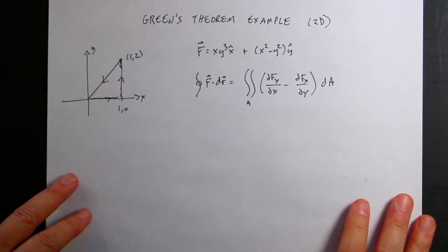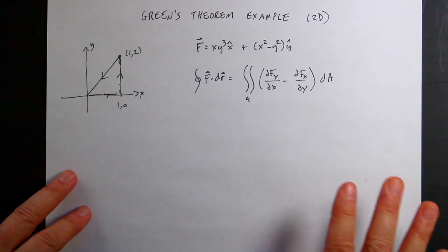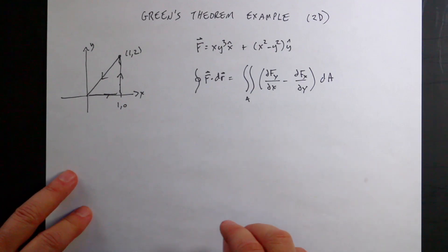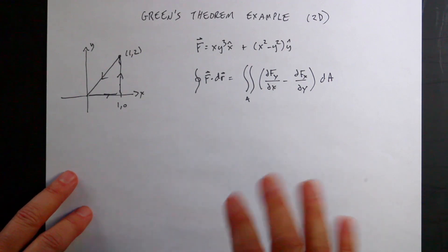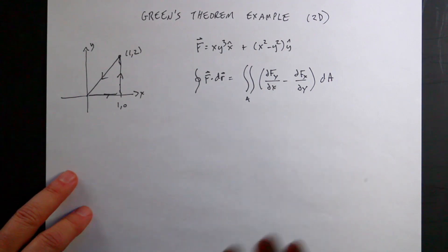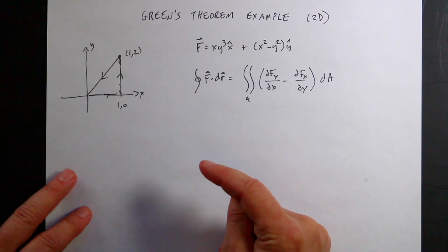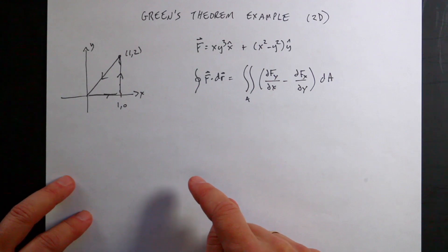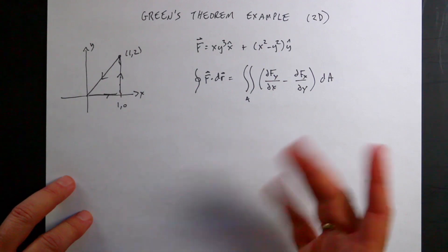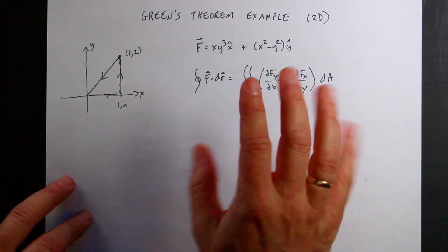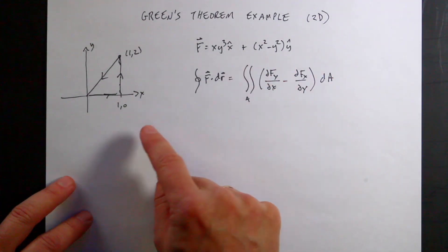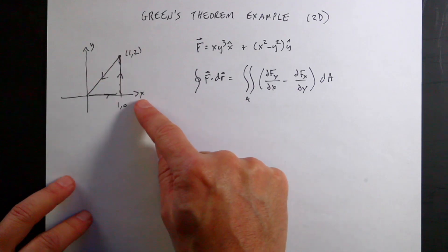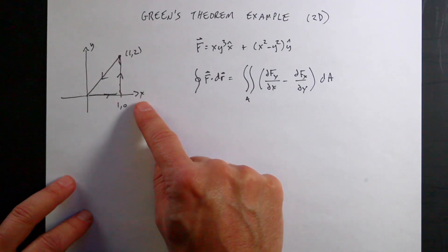I want to do an example of Green's Theorem. You may have used Green's Theorem without even knowing it in Maxwell's equations, but let's just do this from a mathematical point of view. I'm not going to derive it — I'm going to tell you what it says in two dimensions, and then I'm going to show you that both sides of the equation are the same. In two dimensions, I can take a path integral around some loop and relate it to a surface integral.